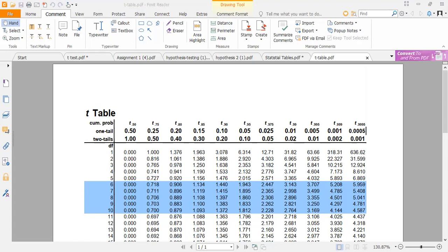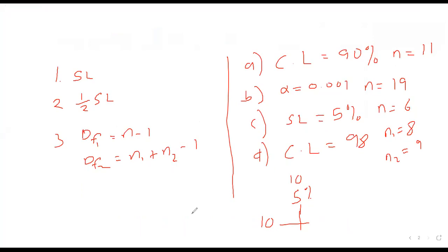For Problem B: alpha equals 0.001, N equals 19. When you multiply 0.001 by 100, the significance level is 0.1%. Half of this is 0.05%. N is 19, so N minus 1 is 18. We look for where 0.001 and 0.0005 meet under degree of freedom 18.